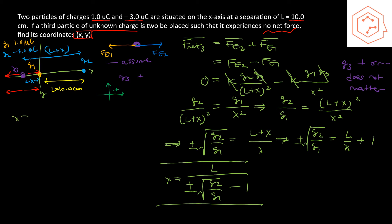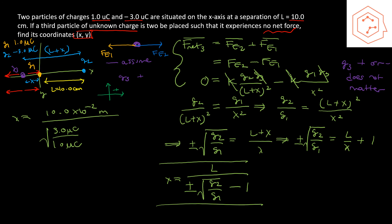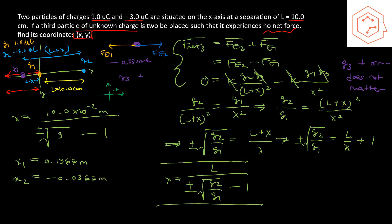Substituting the numbers and considering both roots, we compute x = (10×10⁻² m) / (±√(3/1) − 1). We use only magnitudes of the charges since we already accounted for signs through force directions. For the positive root, x₁ = 0.1366 meters. For the negative root, x₂ = −0.0366 meters. Since x was defined as distance to the left of the origin, positive x is towards the left and negative x is towards the right.